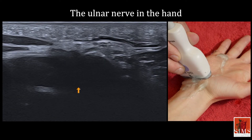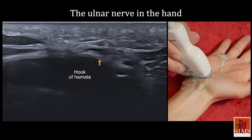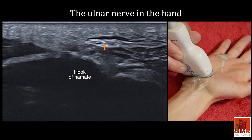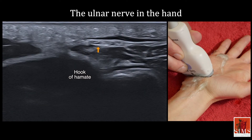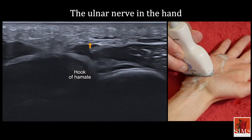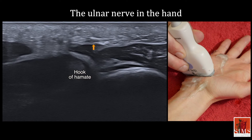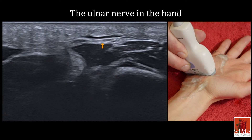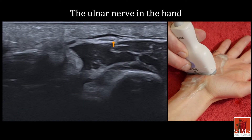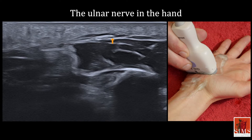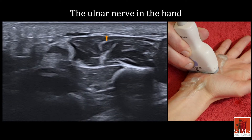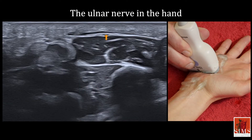At the hook of the hamate, the sensory branch splits into two terminal branches: the fourth digital nerve and the medial nerve, which can be followed to the end of the fifth finger.